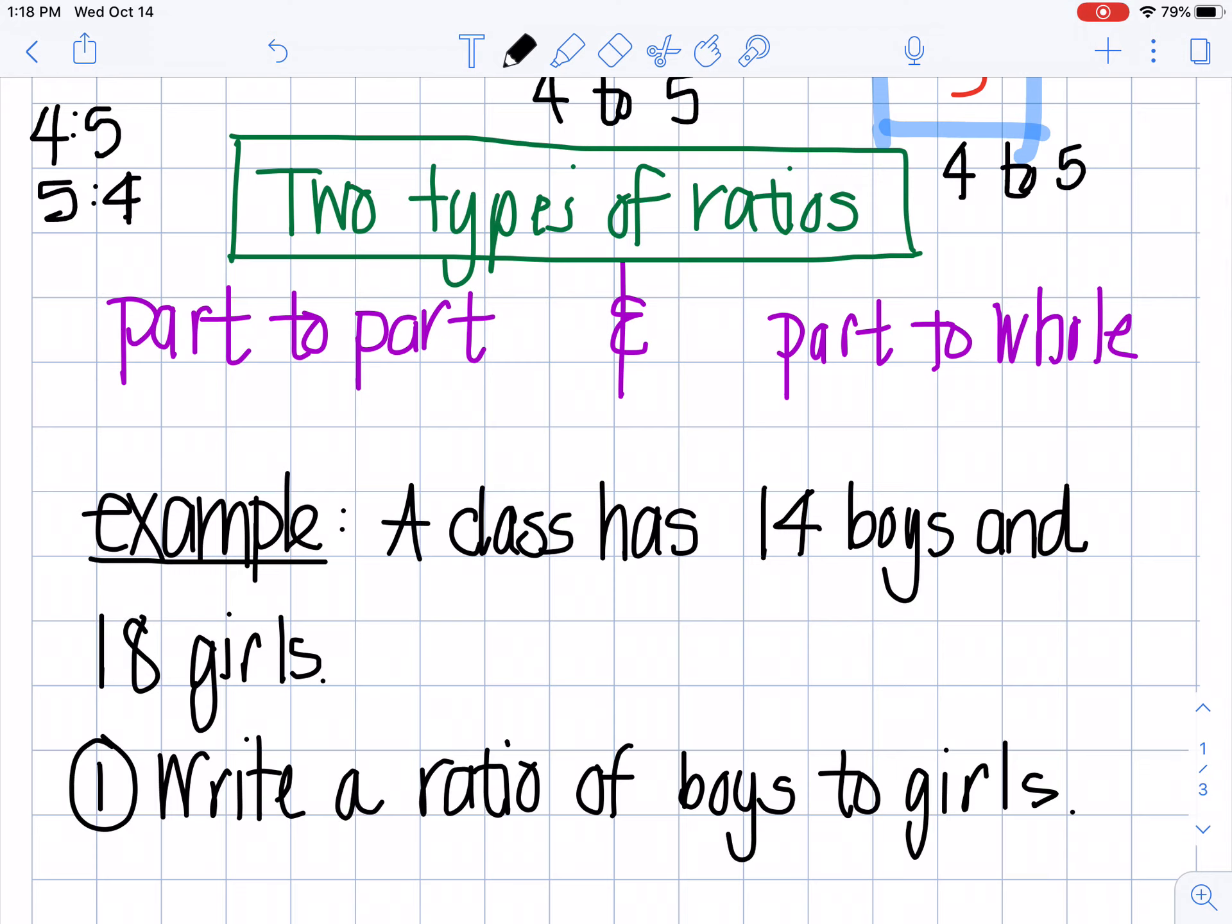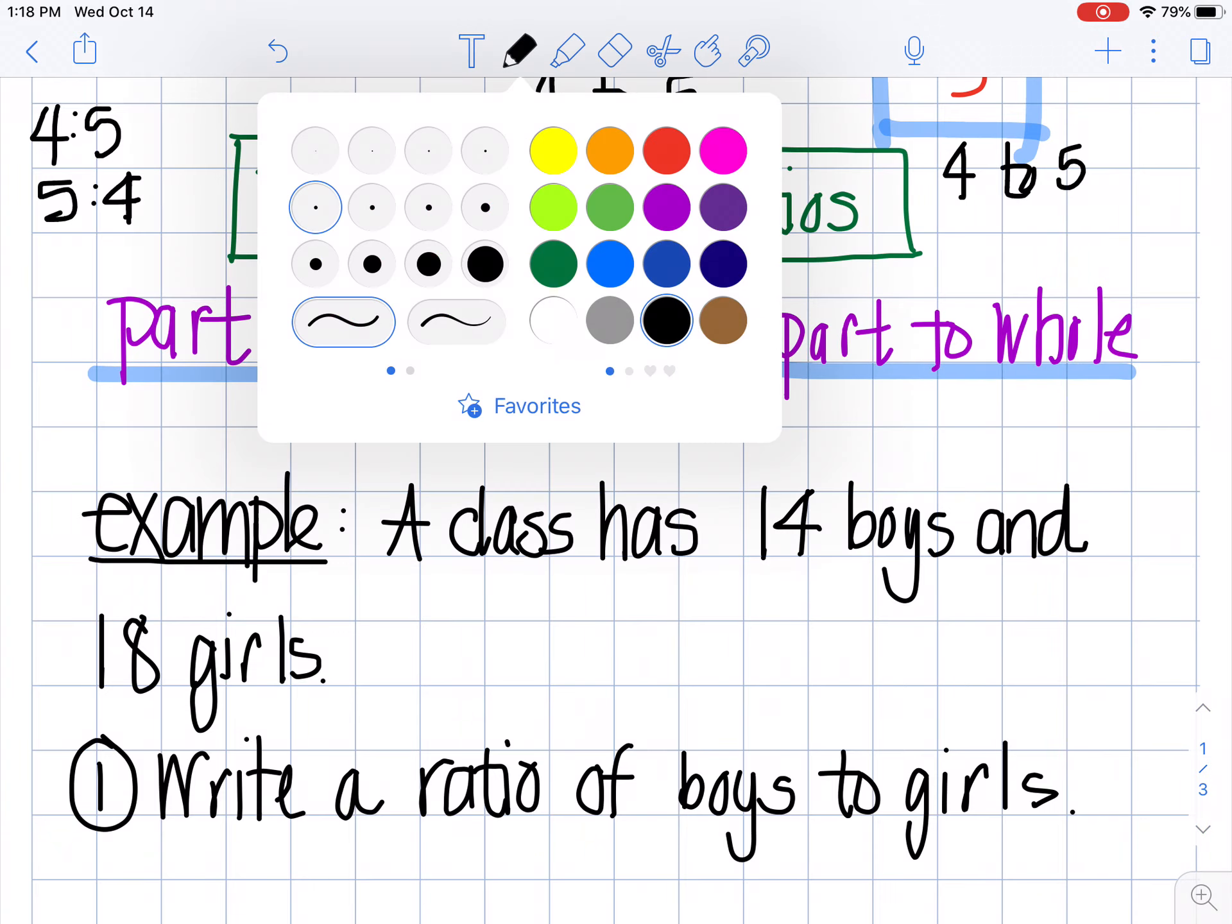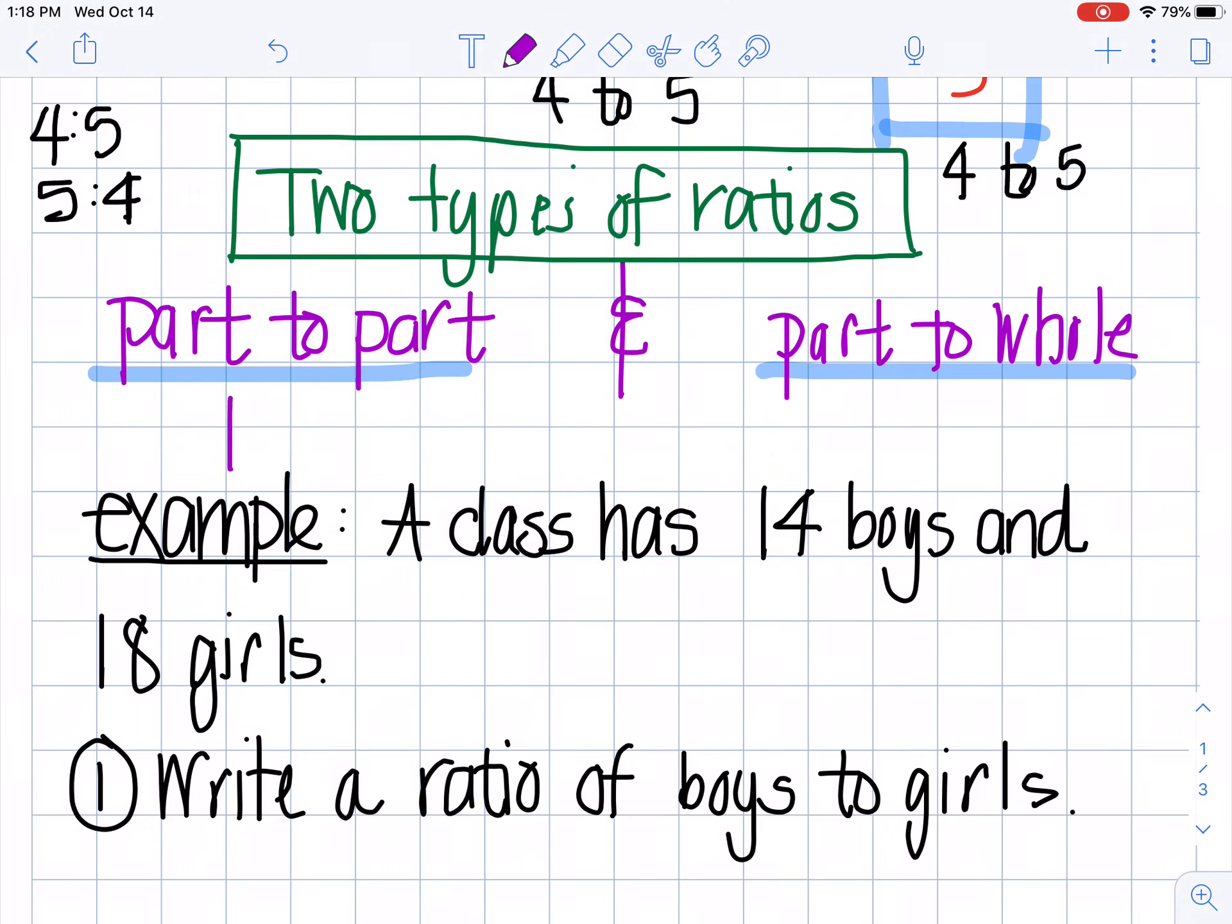We have two types of ratios. We have what's called a part-to-part ratio and a part-to-whole ratio, and I like to abbreviate it. I like to write it P to P or P to W for part-to-part and for part-to-whole. So when you have a ratio, the part-to-part means that you're comparing parts of numbers, and then the whole means the whole kind of group. So let me explain the easiest way to do that is by giving you an example.